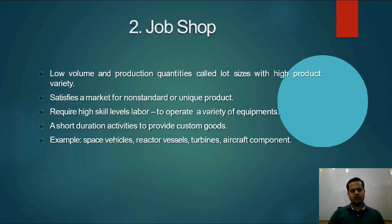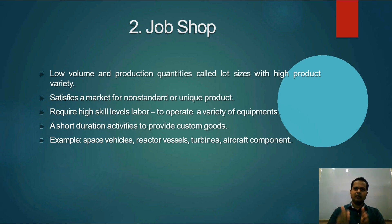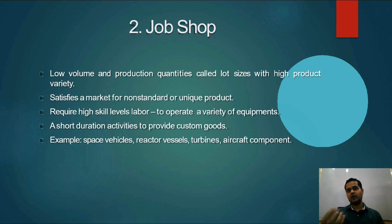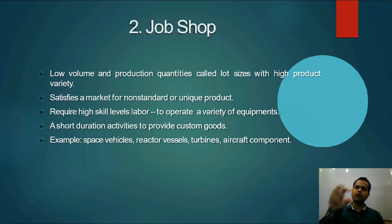The next type is job shop production. In job shop, the volume is less but the variety is high. For example, you have shoes — you may have 10 pairs but 50 varieties. We will call it a job shop. The production volume is low but variety is very high. Job shop involves products of high variety but low volume. In a big company this type is not typically used.